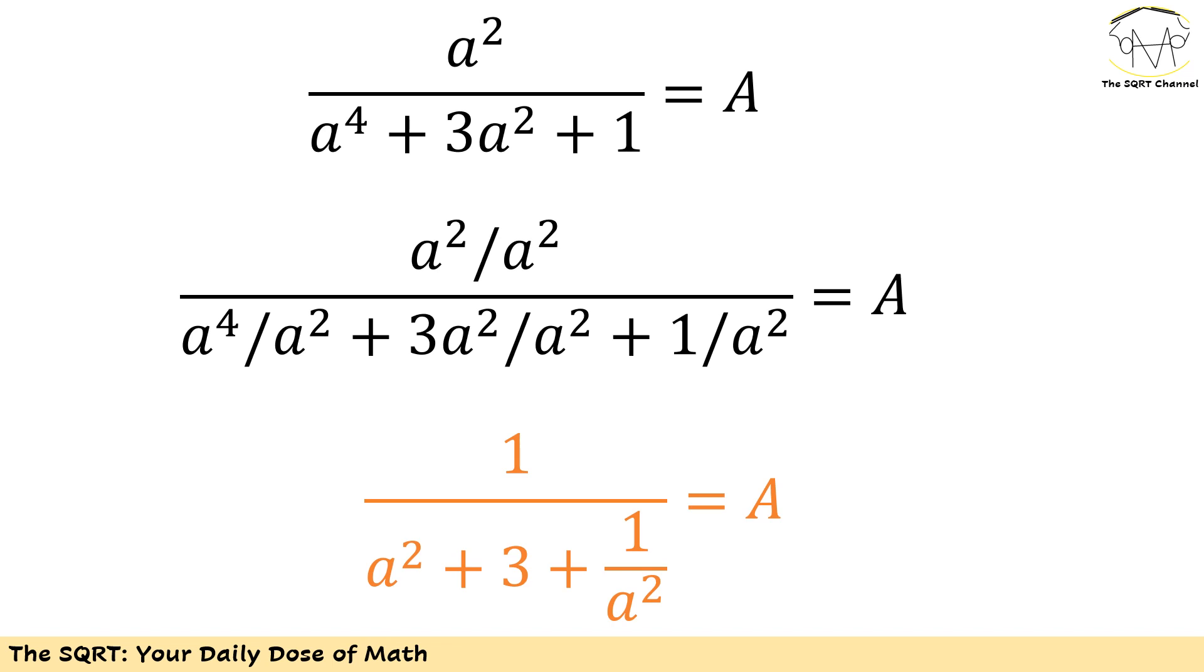Note that a cannot be 0 since if we put 0 in the original fraction that we had we are not going to end up with 7, we are going to end up with 0. So a is not 0, a squared is not 0, and I can divide everything by a squared.